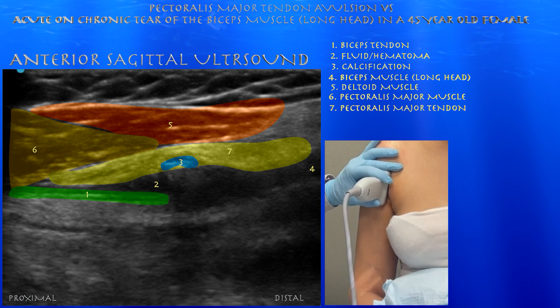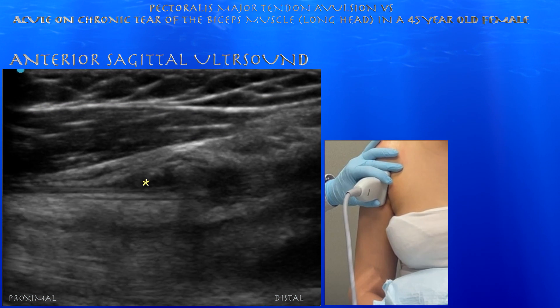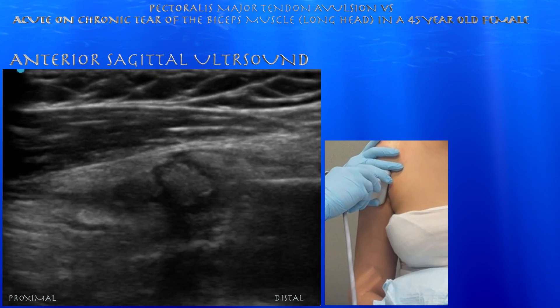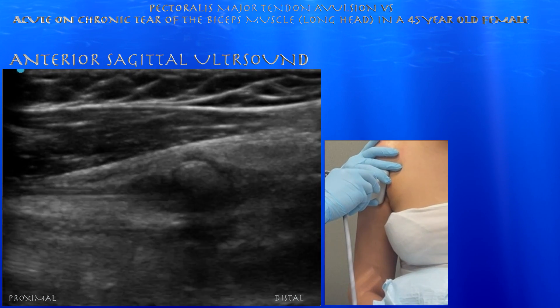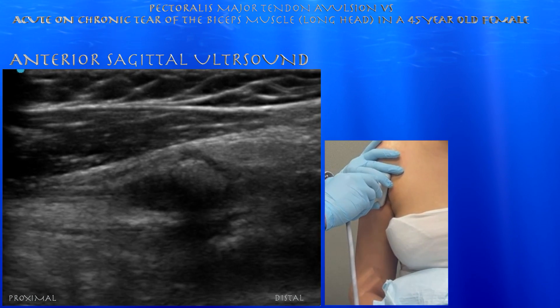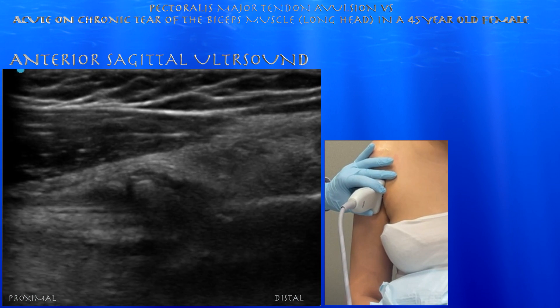Here you can see the long axis view of the biceps tendon, and you can see this calcification. It looks like it's in the long head of the biceps muscle, but actually it's in the tendon of the pectoralis major muscle. It could be just an avulsion from the humeral shaft, perhaps.